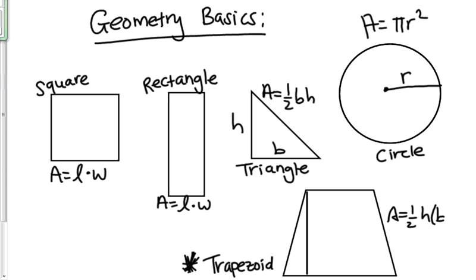Let me erase that because you might not be able to see that very well. I'm going to rewrite that over here. Area equals one half height, parentheses, B1 plus B2, which stands for base one. And this is base two. And then this would be your height.